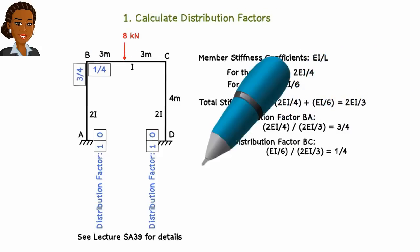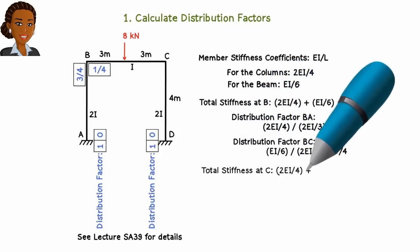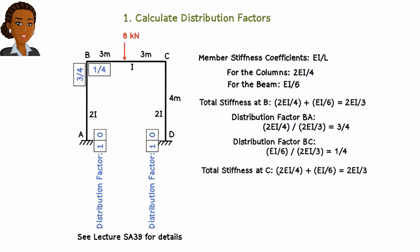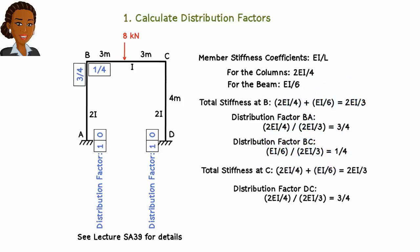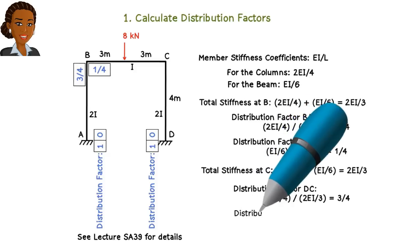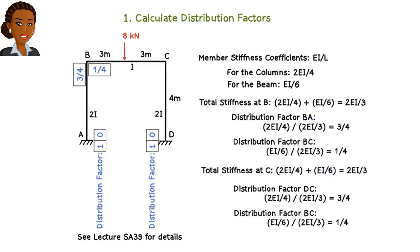As for joint C, its total stiffness is also 2EI over 3. This makes the distribution factors 3 over 4 at the column end and 1 over 4 at the beam end.